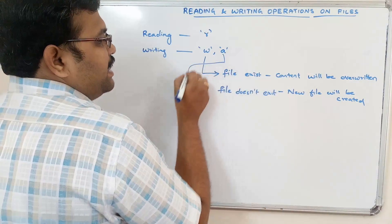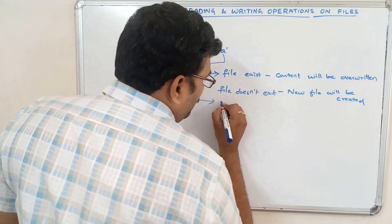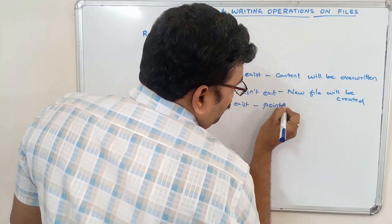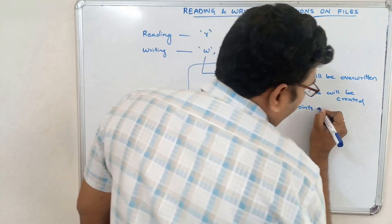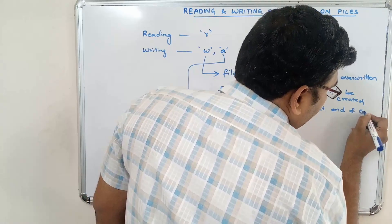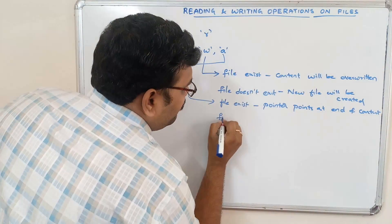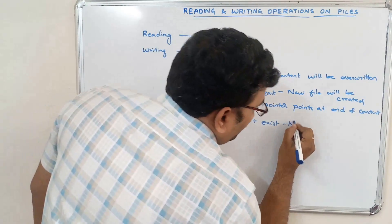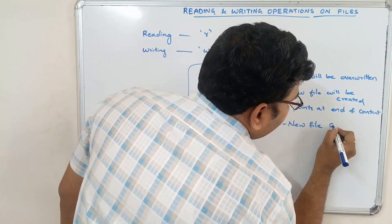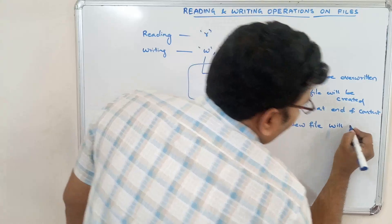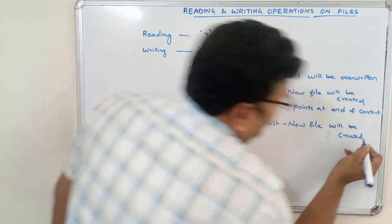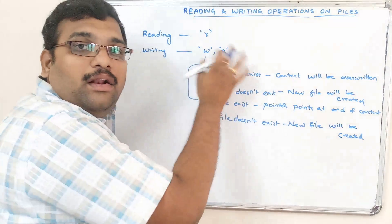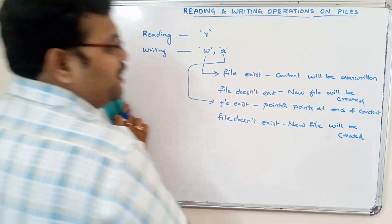In append mode, if the file exists the file pointer is set to the end of the content. If the file doesn't exist, a new file will be created. So a file can be created in either write or append mode. After opening the file we then perform the reading and writing operations.